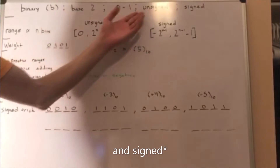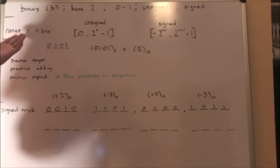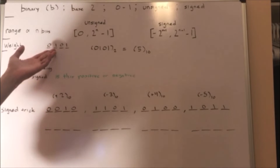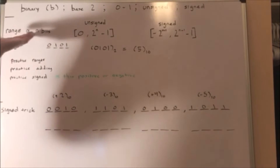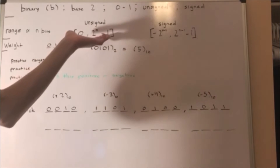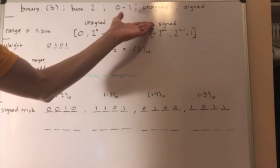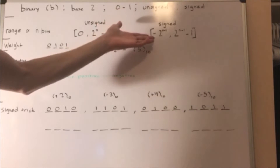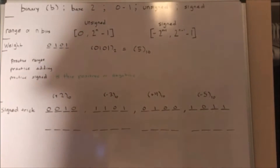Unsigned binary numbers have a range proportional to the number of n bits — n being 4, for example. The range that your n bits can represent is 0 inclusive to 2 to the n minus 1. And if you're using a signed number representation system, your range is negative 2 to the n minus 1 inclusive to 2 to the n minus 1 minus 1.